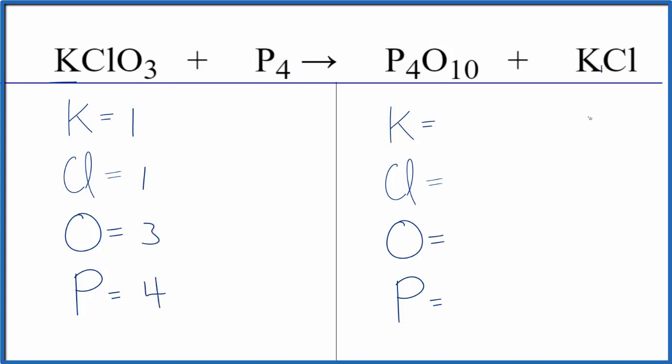In the products we have one potassium and one chlorine again and then four and then ten oxygens and then four of these phosphorus atoms. So everything's going fairly well here and then we have this 10 and the 3. I'm gonna leave the phosphorus till last.